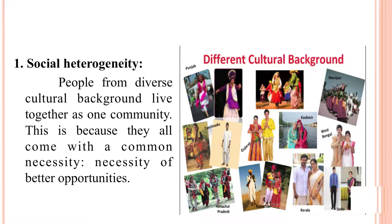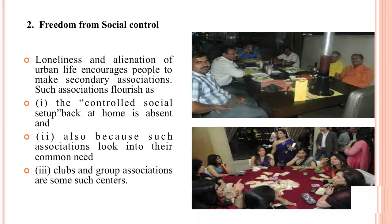Characteristics of urban life include: first, social heterogeneity — people from diverse cultural backgrounds live together as one community, because they all come with a common necessity for better opportunities. Second, freedom from social control — loneliness and alienation of urban life encourages people to form secondary associations, as the controlled social setup back home is absent. Third, clubs and group associations are some such centers.